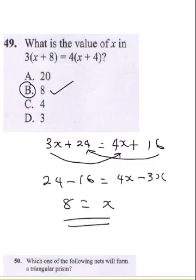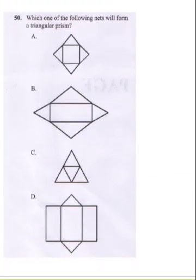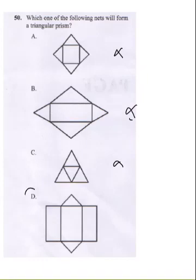The last question for the day says: which one of the following will form a triangular prism? Option A is not correct because the cut is incomplete and will not form. The same applies to the next options — they will not form. The correct answer here is D. Go look at diagram D for your triangular prism and you'll see that D is the correct answer.